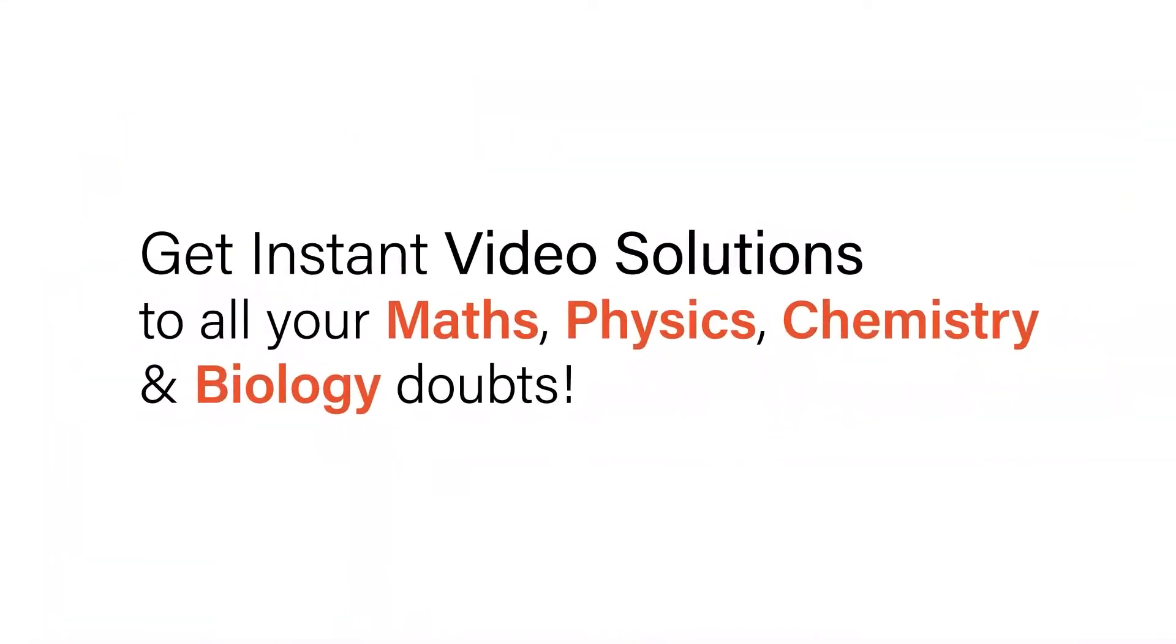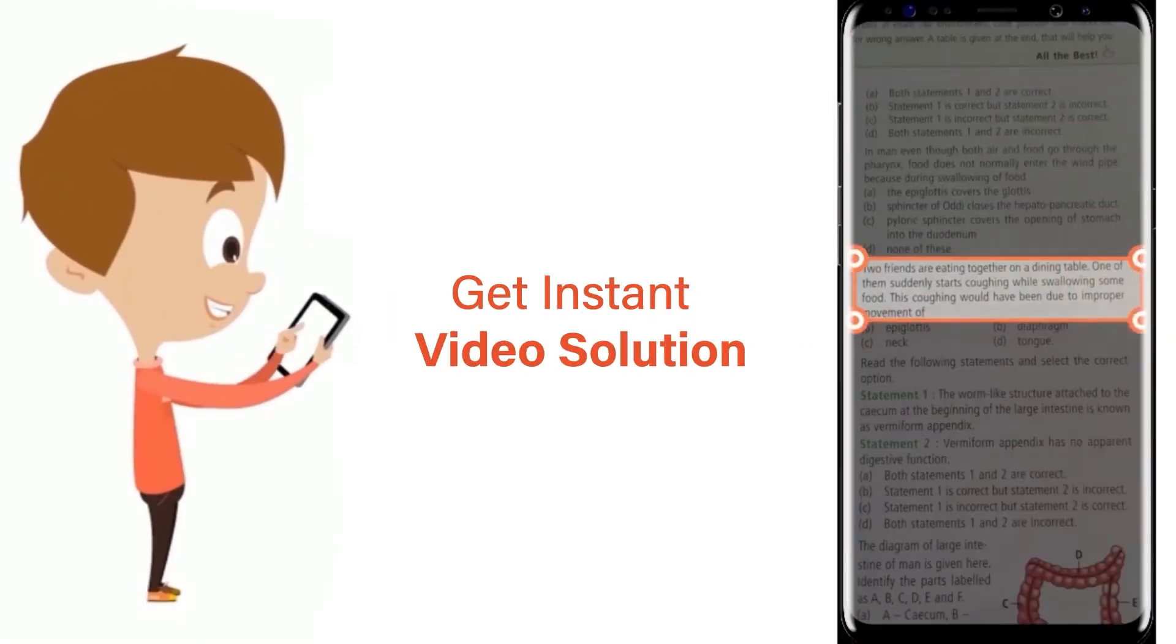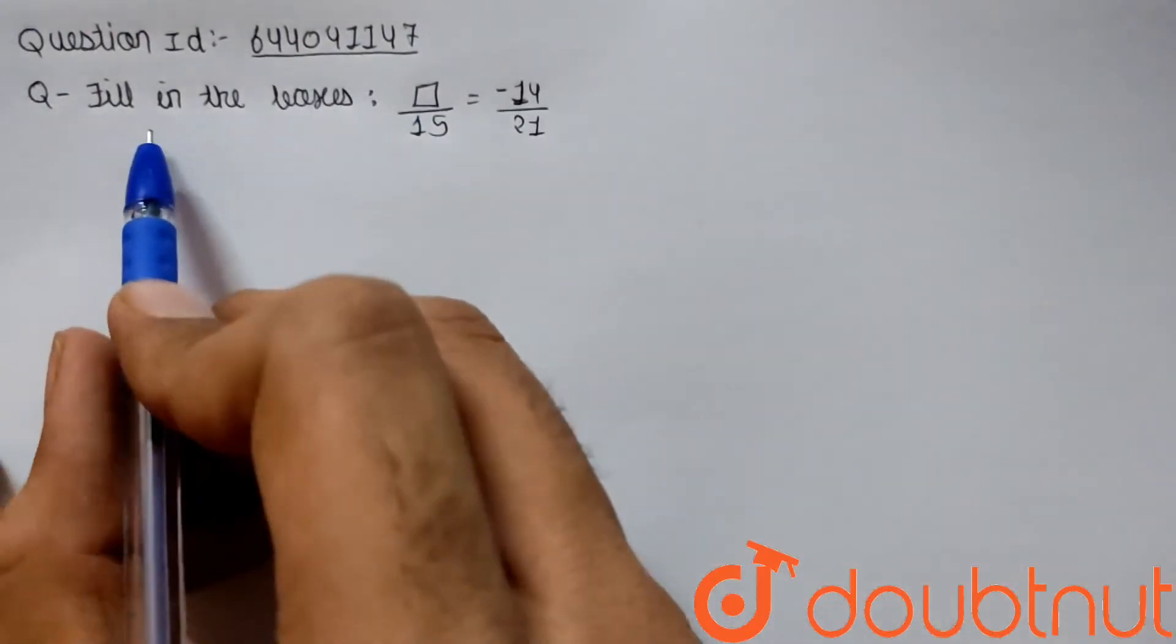With Doubtnet, get instant video solutions to all your maths, physics, chemistry, and biology doubts. Just click the image of the question, crop the question, and get instant video solution. Download Doubtnet app today. The given question is fill in the boxes: box by 15 equals minus 14 by 21.